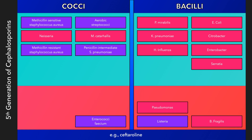Fifth generation cephalosporins, represented here by ceftaroline, are the only cephalosporins with coverage against methicillin-resistant Staphylococcus aureus. Ceftaroline is also active against penicillin-resistant Streptococcus pneumoniae and oxacillin-resistant coagulase-negative staphylococci. However, it is not effective against pseudomonas. Common indications include community-acquired pneumonia and acute bacterial skin and soft tissue infections, as well as invasive infections such as endocarditis. There are also combinations of cephalosporins with beta-lactamase inhibitors, such as ceftolozane-tazobactam, which are active against Pseudomonas aeruginosa, Bacteroides fragilis, and ESBL-producing Enterobacteriaceae, though these go beyond the scope of this lecture.